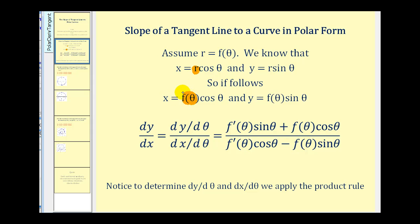So we have x equals f of theta cosine theta, and y equals f of theta sine theta. To determine dy/dθ, we apply the product rule to f of theta sine theta, which gives this sum. To find dx/dθ, we apply the product rule to f of theta cosine theta, which gives a difference of two products, because the derivative of cosine theta is negative sine theta.